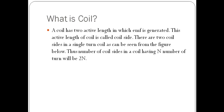As we have seen in the previous picture, a coil consists of two active lengths. The active length here is the coil side, and in this active length EMF is generated. There are two coil sides in a single-turn coil as we have seen in the figure. Thus, the number of coil sides in a coil having N number of turns will obviously be 2N.